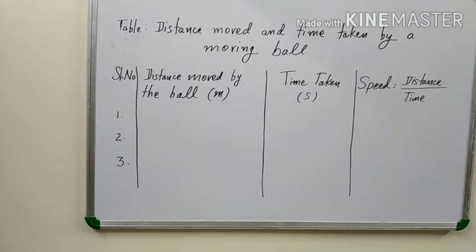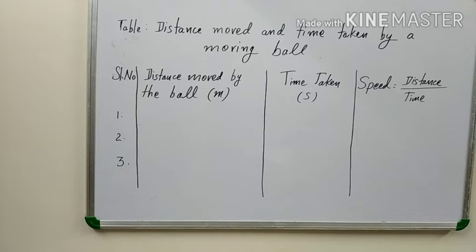For this also, you can take two or three readings. Distance you have to measure in meters and time is to be measured in seconds. Using distance in meters and time in seconds, you can calculate speed.